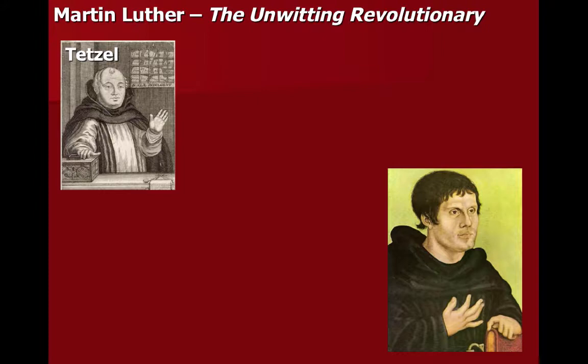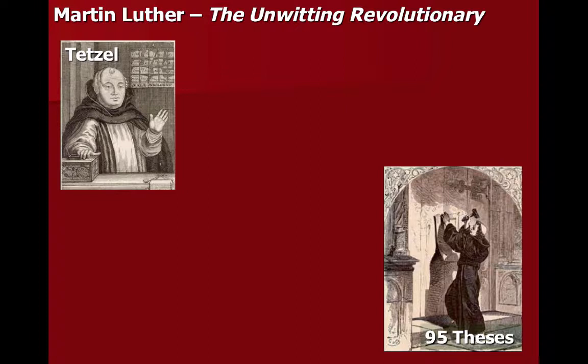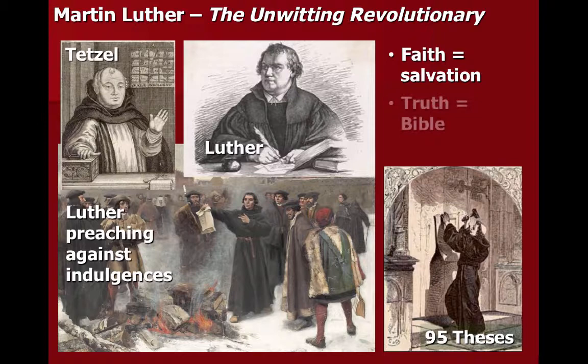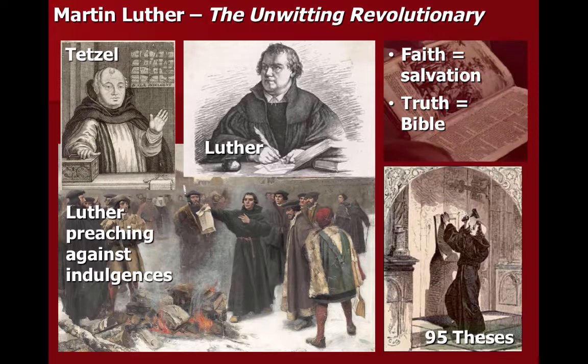In 1517, he famously tacked 95 theses to the Wittenberg church. With no billboards and newspapers at the time, if you wanted to send a message, you did so by advertising at the center of town, which was the church. This was the beginning of his formal protest against some practices of the church. He stated that faith was key to salvation, not actions, and that truth was found only in the Bible, not in the teachings of the Catholic church. Using the printing press, Luther managed to spread his ideas and influence people not only in the Holy Roman Empire, but throughout Europe as well. This transformed a regional protest into a widespread political revolution.